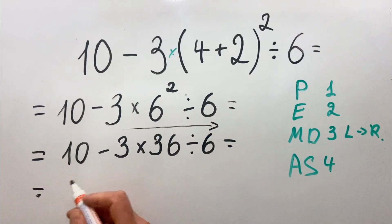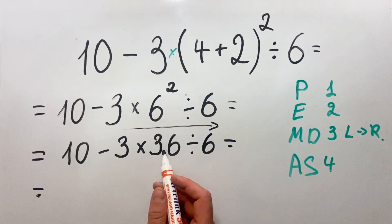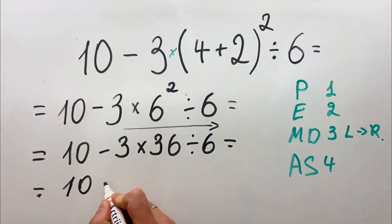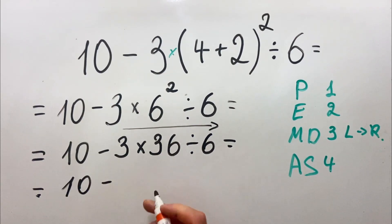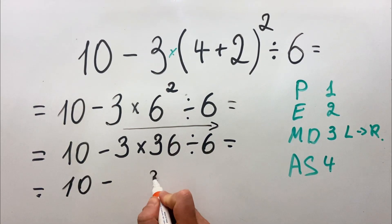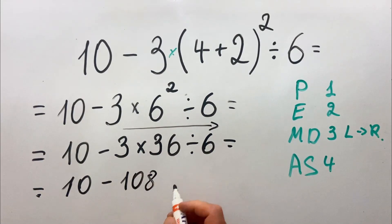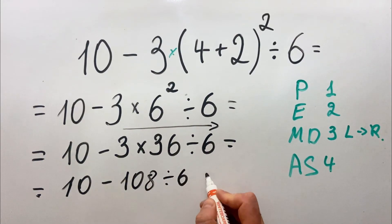We have 3 multiplied by 36, which is 108. So basically 3 multiplied by 6 is 18, we put here 8. 3 multiplied by 3 is 9 plus 1 is 10, so 108 divided by 6.